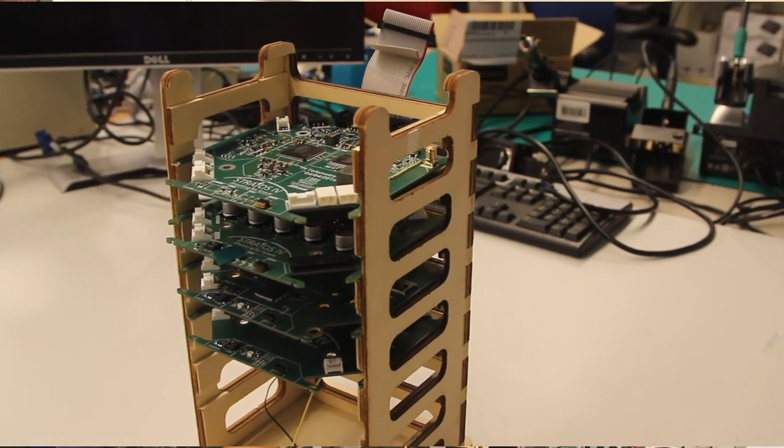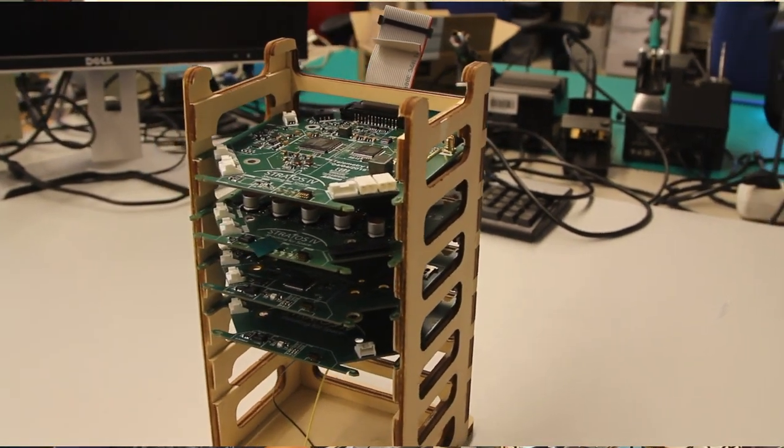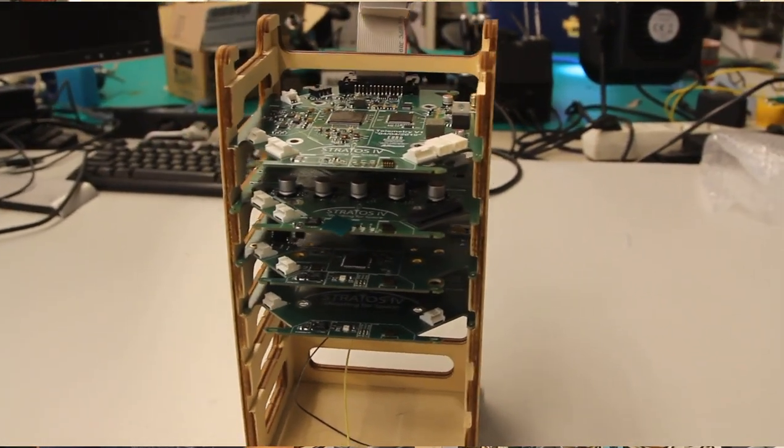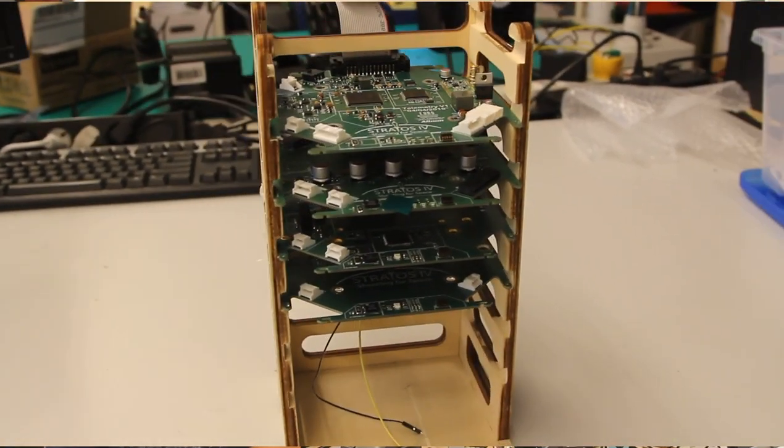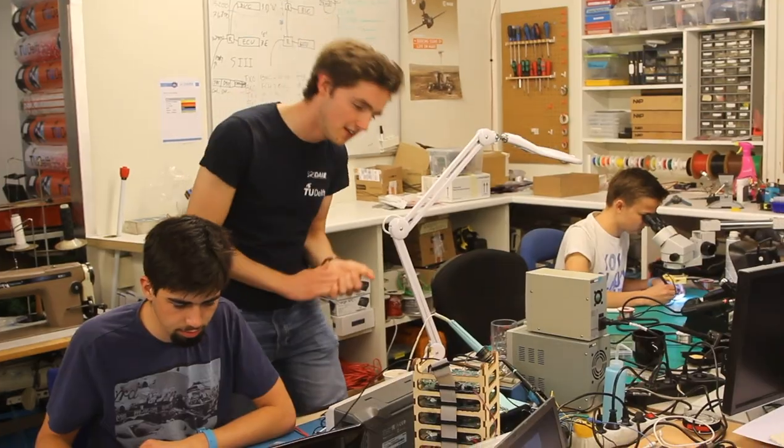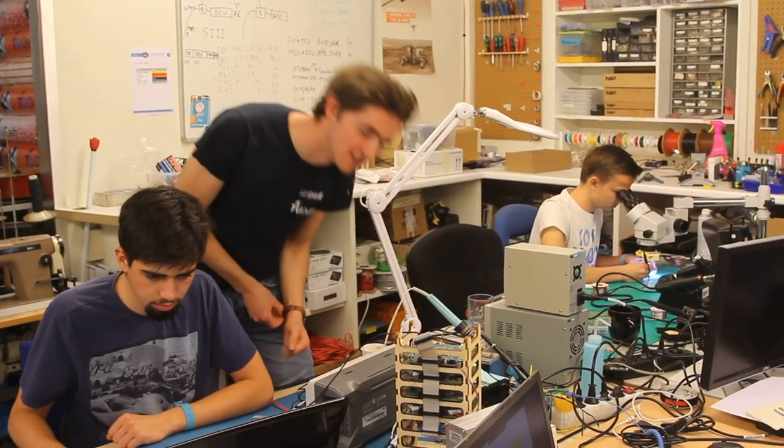Then below that we have the recovery board, which deploys the parachutes and makes sure the rocket separates on its highest point in flight. Below that we have the main control unit, which is reading out the GPS. And then we have the data control unit, which is communicating with the black boxes in which we also store data.